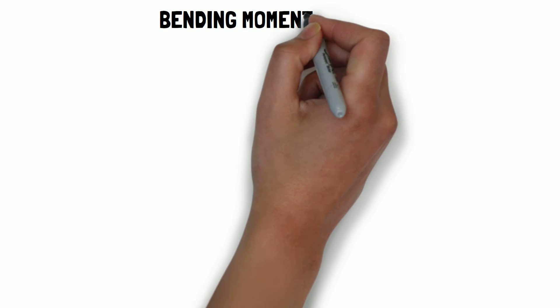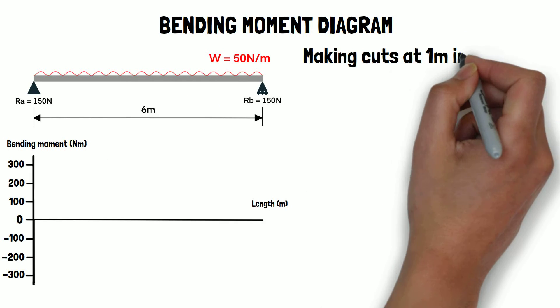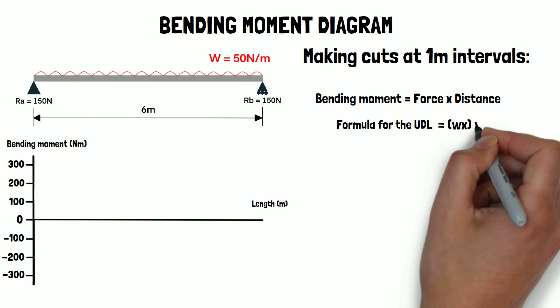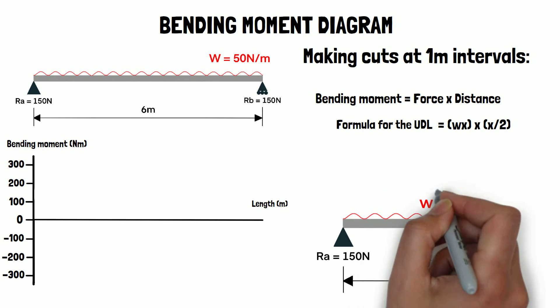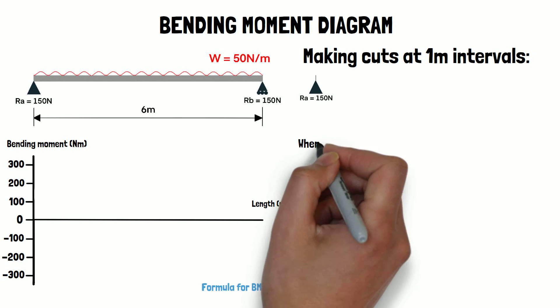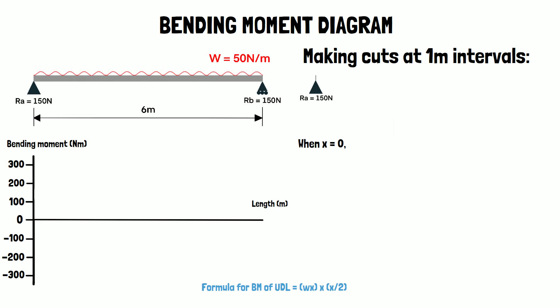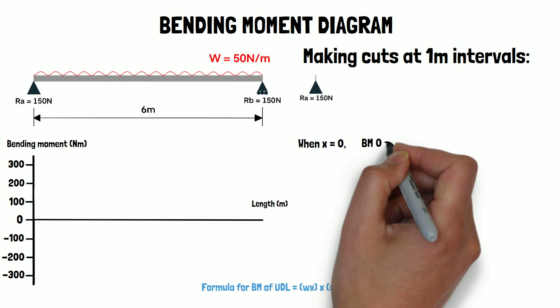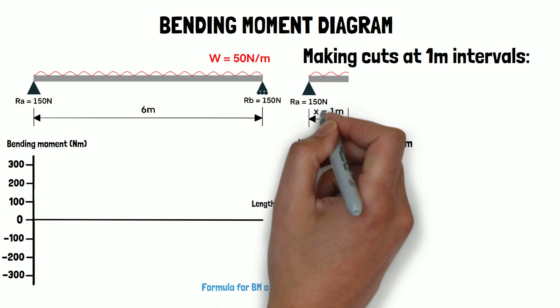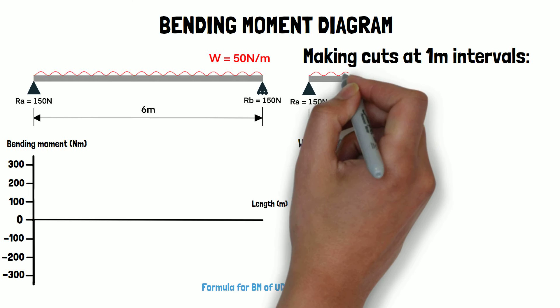Next we'll look at how to draw the bending moment diagram for the same beam. This time we'll be making cuts at one meter intervals to achieve a more accurate graph. As a bending moment equals force times distance, the formula for the UDL is W times x times x over 2. This is because the UDL W spans the distance x but is considered to act about the centroid of the portion, which is halfway across. When x equals zero, the bending moment is also zero, so our diagram starts at zero newton meters.